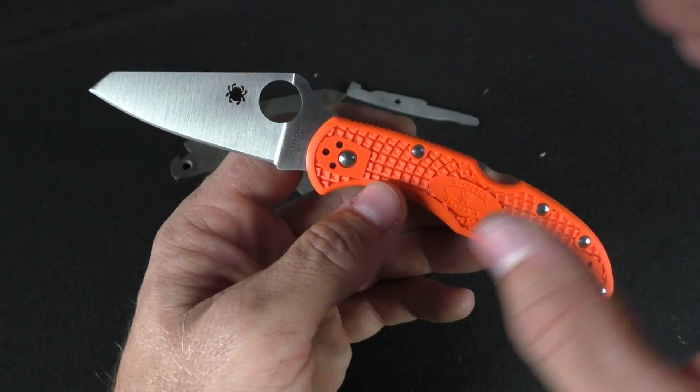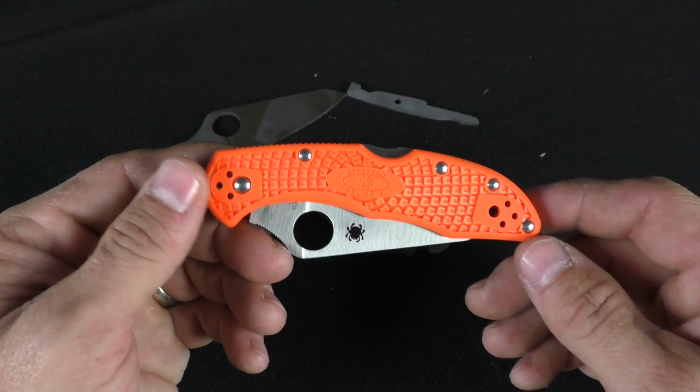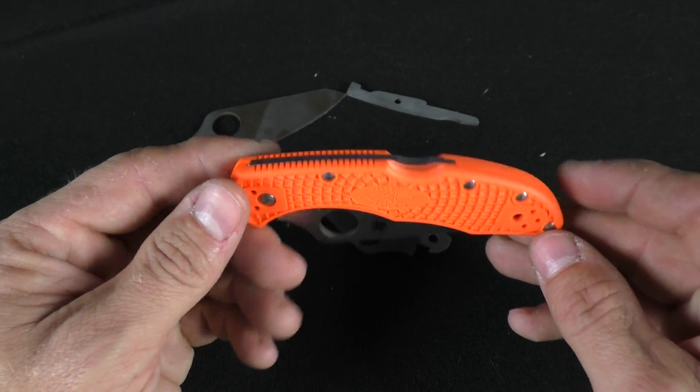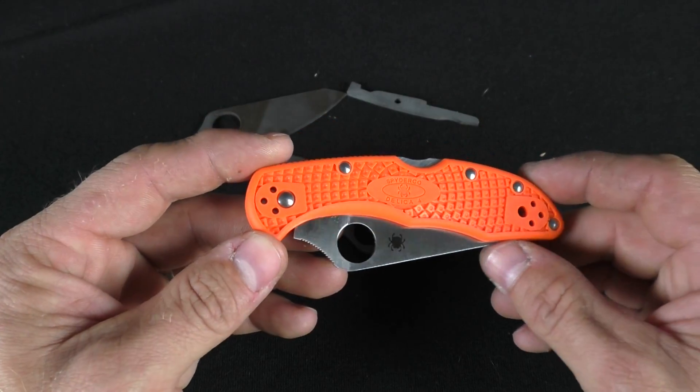Specifically the Spyderco Delica and Endura. They're basically made on the same frame, just a little bit larger, and this is an actual Delica. We just take a knife straight out of the box.